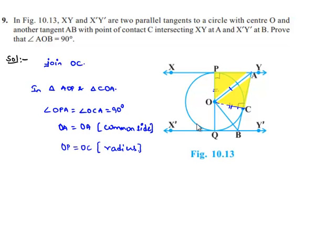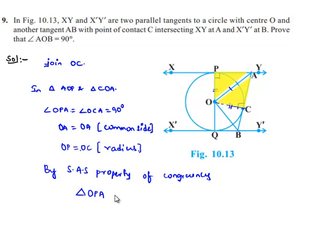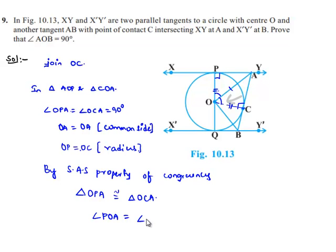By the SAS property of congruency, triangle OPA is congruent to triangle OCA. When two triangles are congruent, their corresponding angles and sides are equal. Therefore, angle POA in triangle OPA equals angle AOC in triangle OAC. That is, angle POA equals angle AOC — let this be equation number 1.